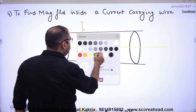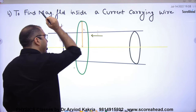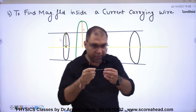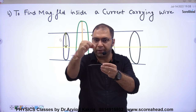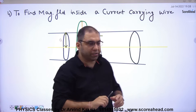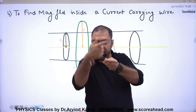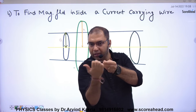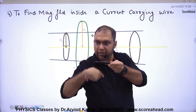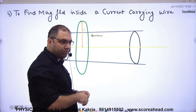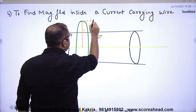To find B, we will draw a closed path. I have made a closed path. If this is the wire and I need to find B at distance r, I draw a closed Amperian path. Current is going through the wire, magnetic lines of force curl around it. So the B vector is inside this closed path, and the dl vector is also along this path.